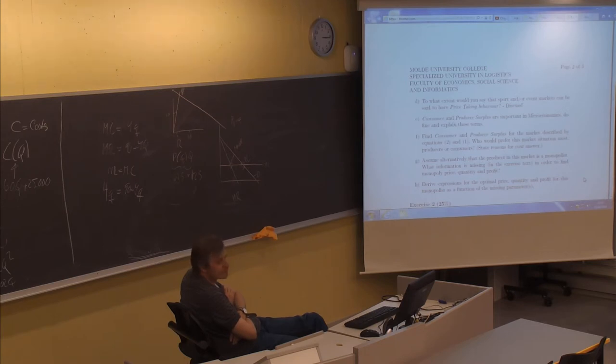Sub-question E: consumer and producer surplus are important in microeconomics. Define and explain these terms. First, we have to define them, and then we have to explain them, so there are two answers needed to perform correctly on sub-question E.